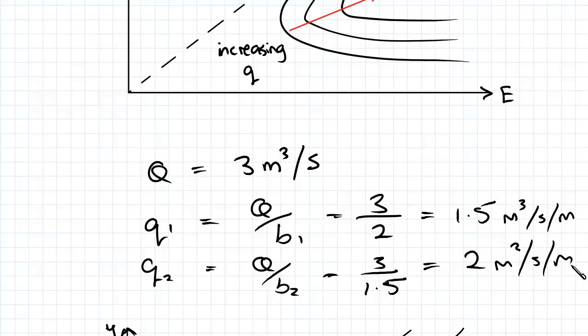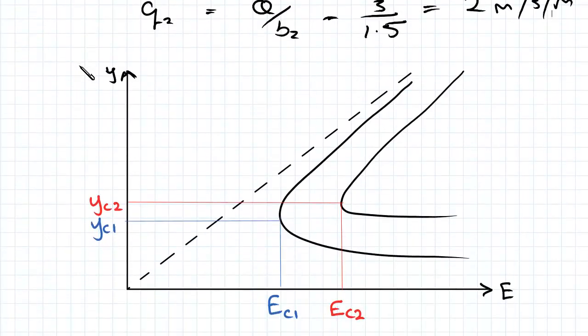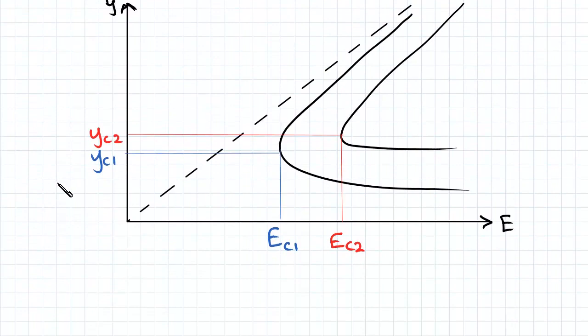In this case we have two different critical points, but we've also got two specific energy values that coincide, which we know from Bernoulli's equation.